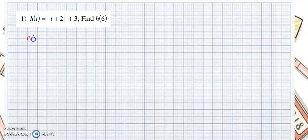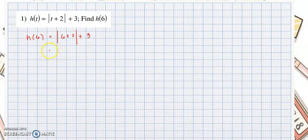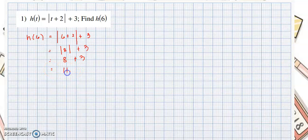To find h of 6, we change all the variable t into 6. So this would be the absolute value of 6 plus 2, plus 3. We evaluate: absolute value of 8 plus 3. The absolute value of 8 is equal to 8, so 8 plus 3 equals positive 11.